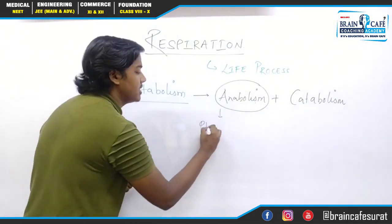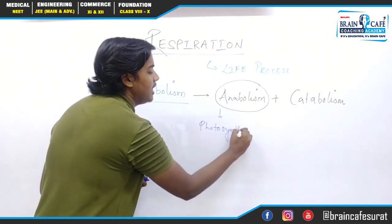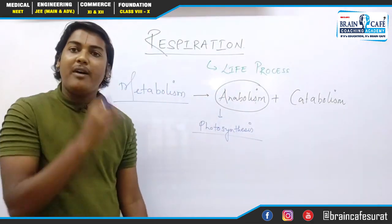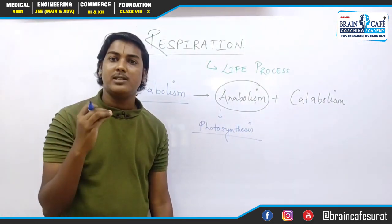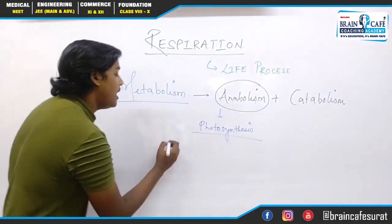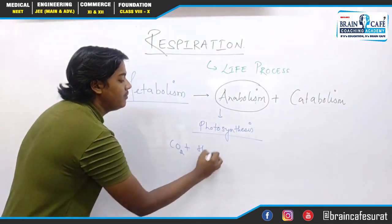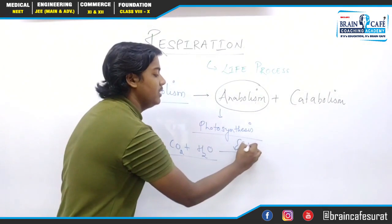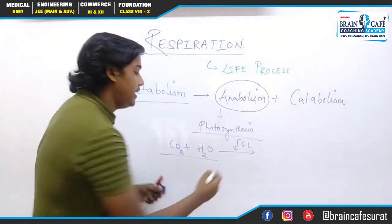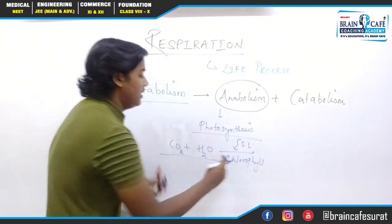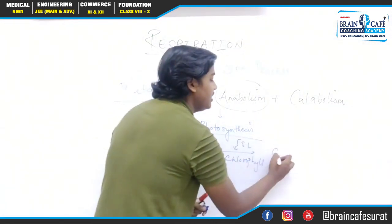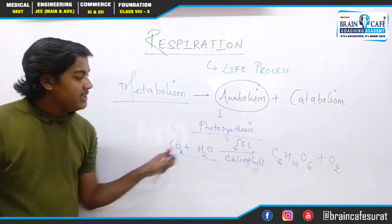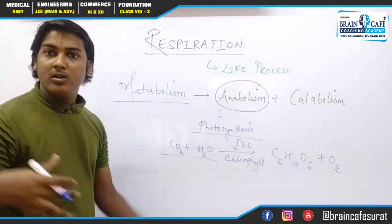Try to understand photosynthesis. Photo means light and synthesis means to produce. With the help of light, plants prepare their own food — that is photosynthesis. In this process, we take CO2 and H2O, these two things combine with each other, and they produce C6H12O6 (glucose) plus oxygen is liberated. So in this equation, two small molecules are combined to make a big molecule — that is why it is an anabolic process.